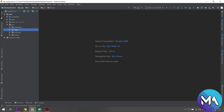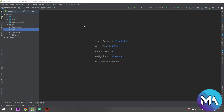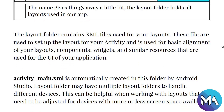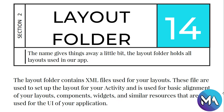As a recap, the resource folder has drawable, layout, mipmap, and values. We've learned about drawable — now let's go to the layout folder. The layout folder contains XML files used for your layouts. These files set up the layout for your activity and are used for basic alignment of layout components, widgets, and similar UI resources.